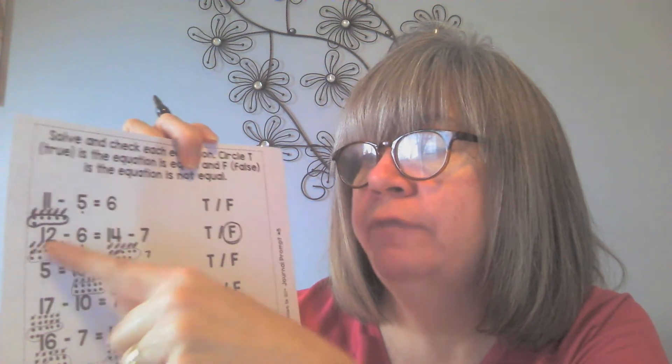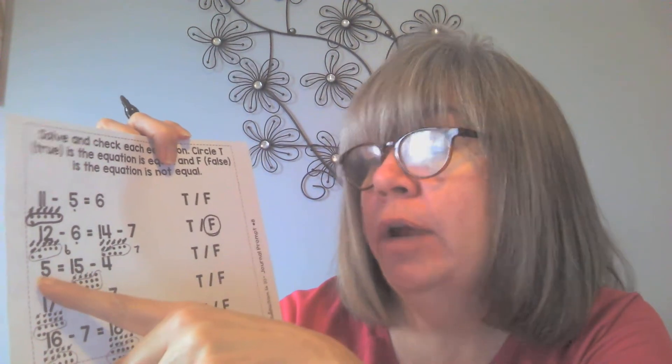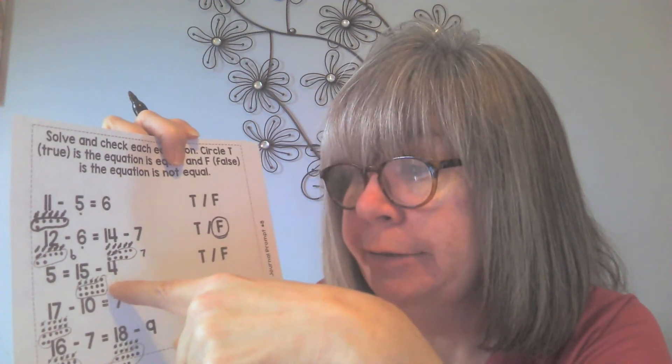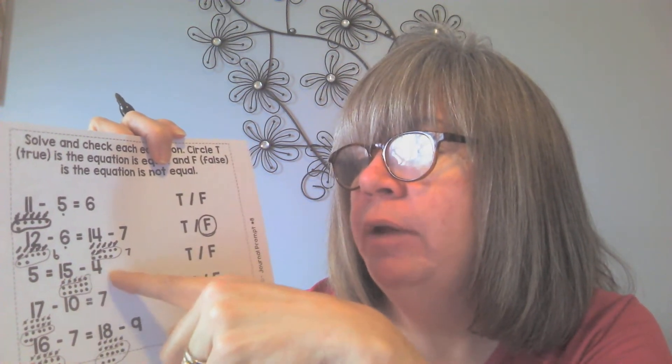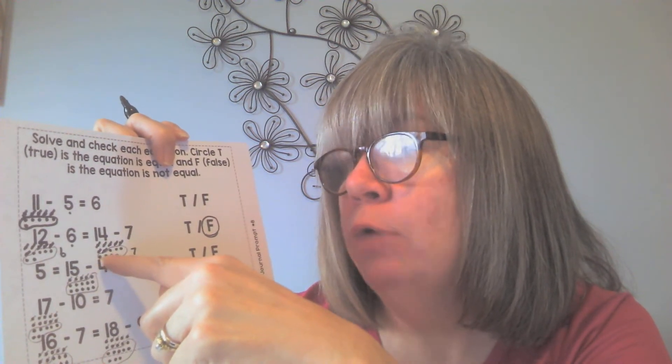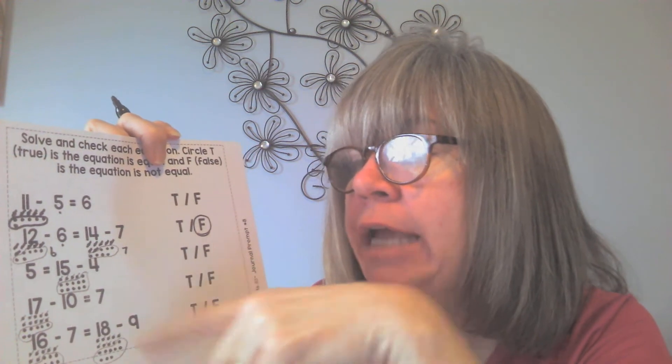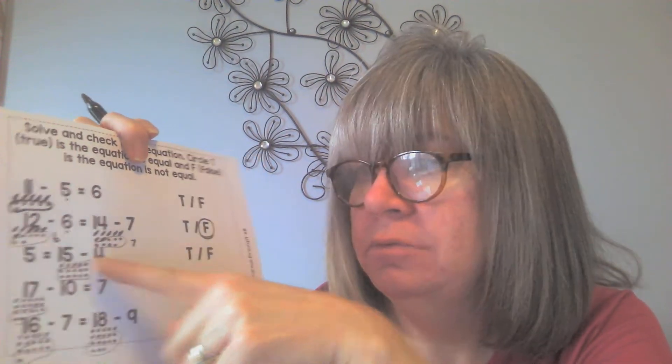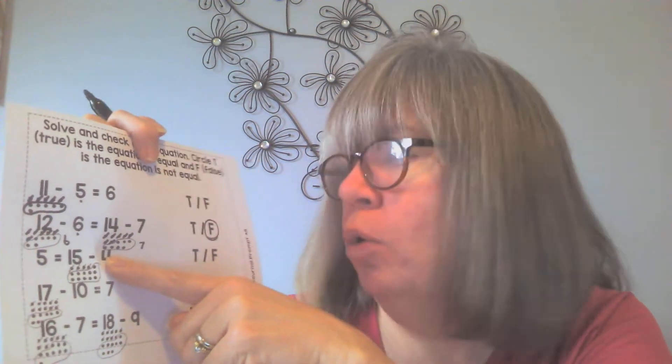The next question looks tricky because the answer is on the left side — it says 5 — and the question is on the right: 15 take away 4. Use touch math: tap your head and say 15, then count back 4: 14, 13, 12, 11. Double-check with dots: 5, 10, and 1 more makes 11. So 15 take away 4 is 11, not 5 — that's false.